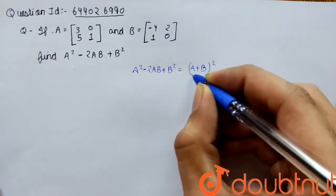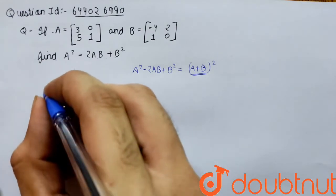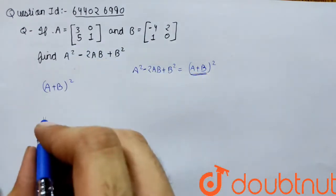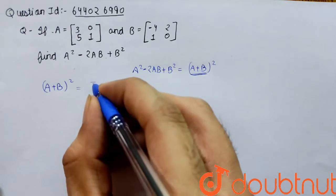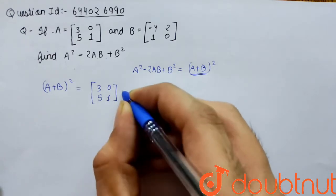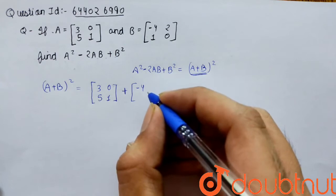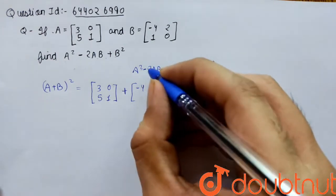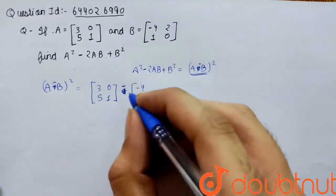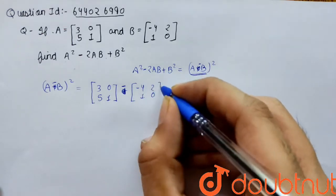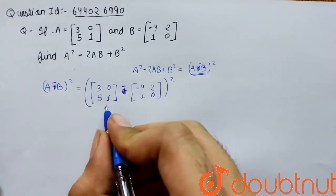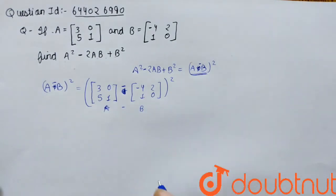We know the formula for A² - 2AB + B² — this is actually (A - B)², not (A + B)². So we will be finding (A - B)². Here A - B means A minus B where B is [-4, 1; 2, 0], so we are finding (A - B) whole square.